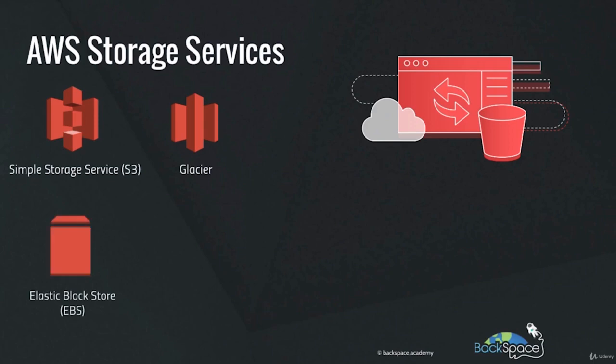Amazon Elastic Block Store, or EBS, is a highly available, low-latency block storage specifically for attaching to servers launched with the Amazon EC2 service. It's similar to attaching a hard drive to your computer at home — it works the same way as block device storage.